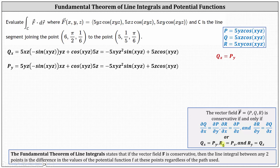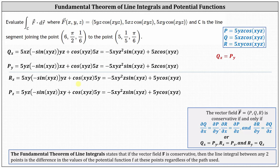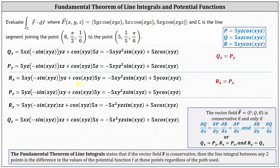We still need to make sure the partial of r with respect to x equals the partial of p with respect to z, and the partial of r with respect to y equals the partial of q with respect to z. I've already worked this out to save time — you may want to pause the video and verify this. We will find that both conditions hold, and we now know the given vector field is conservative.